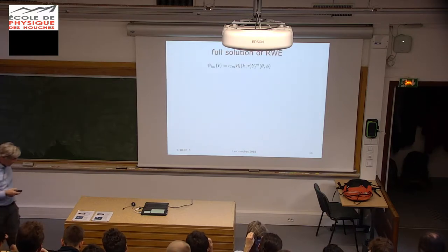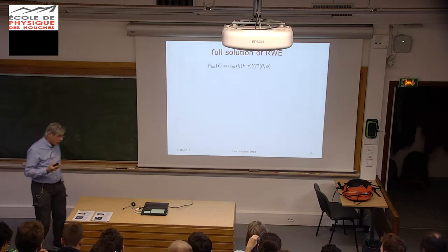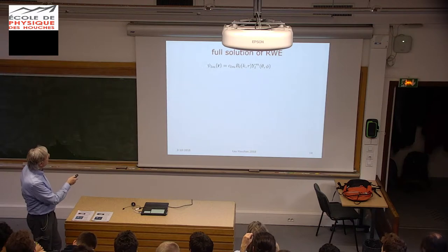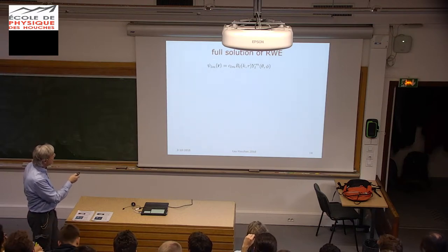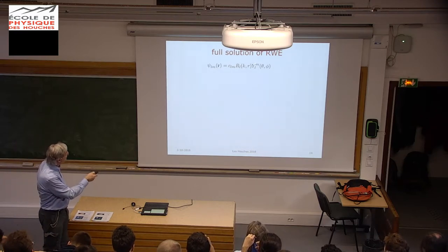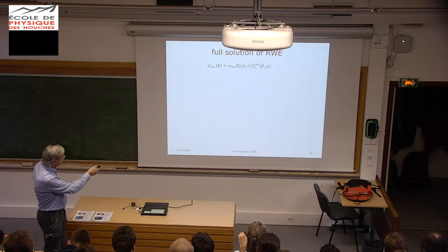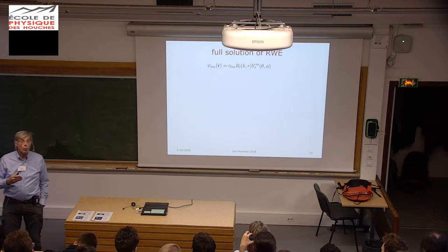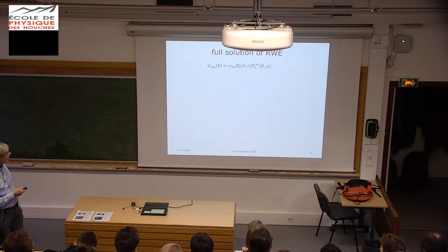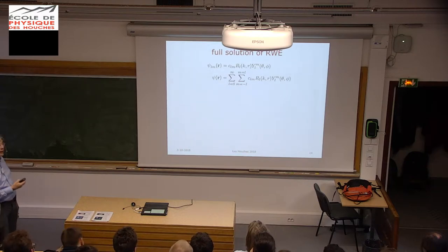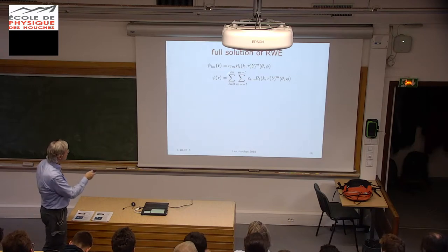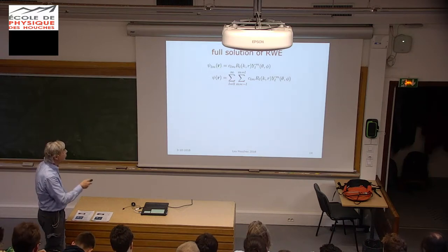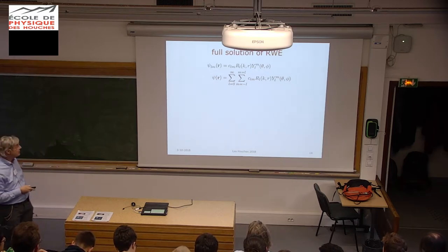Now we have an expression for our wave function. We have solved the differential equation—the radial wave equation with the central potential. The states for the relative motion are given by the product of the radial wave function, which depends on k and r, and the spherical harmonic Y_Lm, with a coefficient. If we want the full solution, we simply have to sum over all eigenstates, meaning over all possible values of the angular momentum and angular momentum projections. An arbitrary state of relative motion can be expressed as this sum over a complete set of eigenstates.